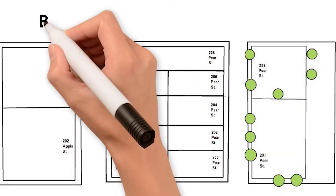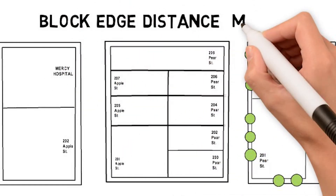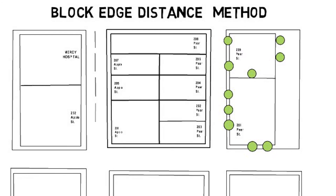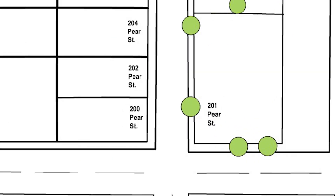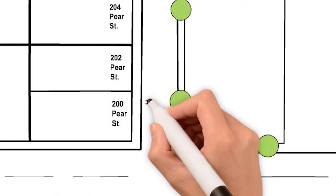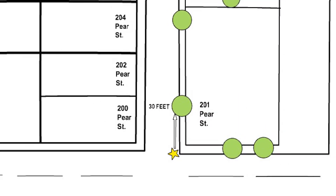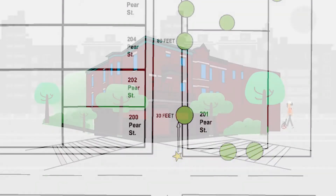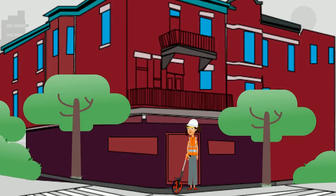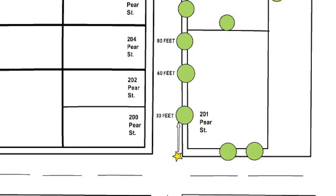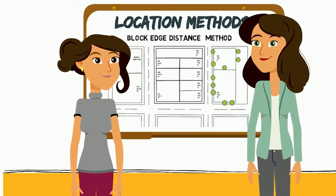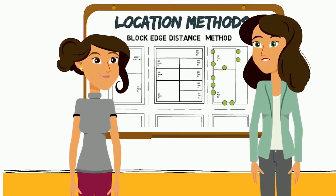Another way to record location is the block edge distance method. That's a location method well suited to gridded urban street systems. The idea is that you measure the distance from the sidewalk corner to each tree. For example, here you have a tree at 30 feet from the curb corner and another tree at 80 feet from the curb corner. It can take a while to set up, but the advantage is that it's super simple to add a new tree later — you could add in a new tree 60 feet from the corner. This is unlike the address and site code method, where trees getting added and removed messes up that numerical sequencing.